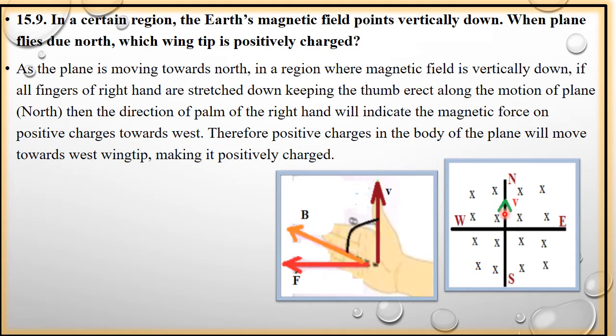Kis direction pe act kar raha hai? Students, right hand palm rule ko use karte hain. Aap ka thumb indicate karta hai direction of motion of plane, aur aap ki jo fingers hain, unki tip inward direction mein show karti hai direction of magnetic field B, aur palm show karta hai direction of force ko jo ke is direction mein hai. So, as the plane is moving towards north in a region where magnetic field is vertically down, if all fingers of the right hand stretch down keeping the thumb erect along the motion of plane, then the direction of palm of the right hand will indicate the magnetic force on positive charges towards west. Therefore, positive charges in the body of the plane will move towards west wing tip, making it positively charged.